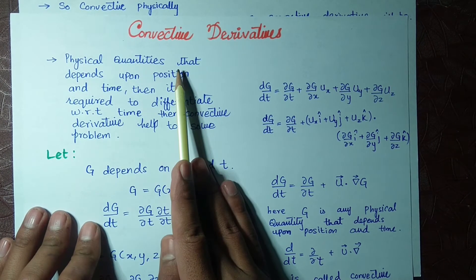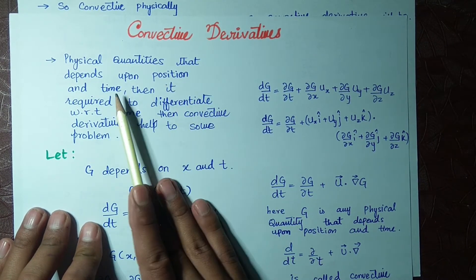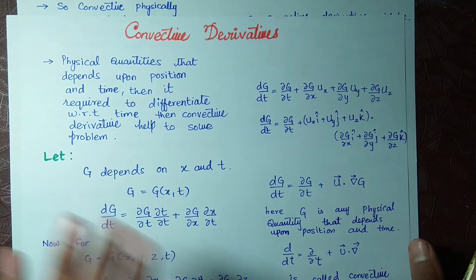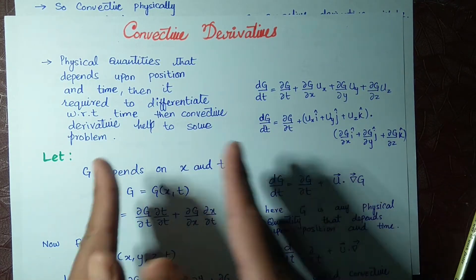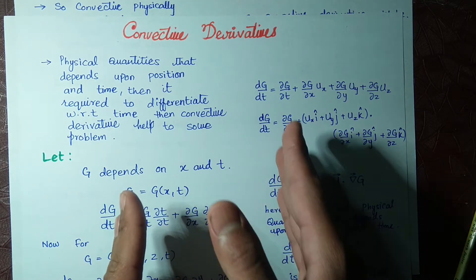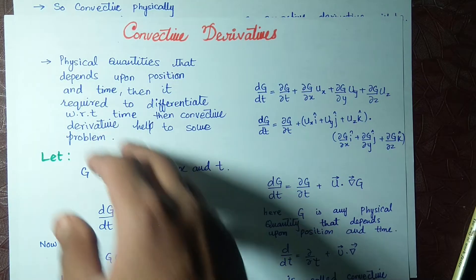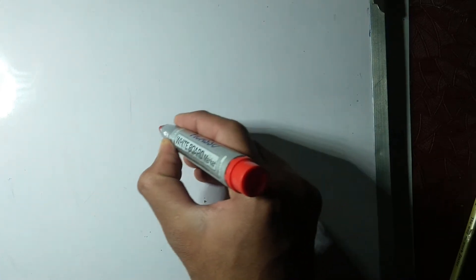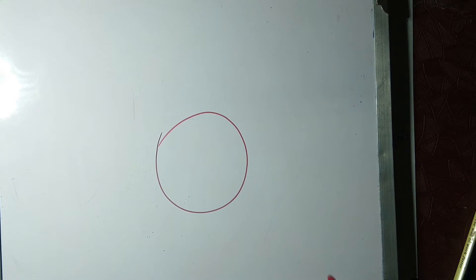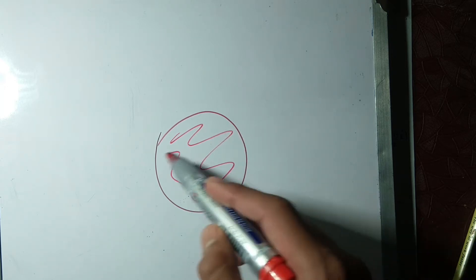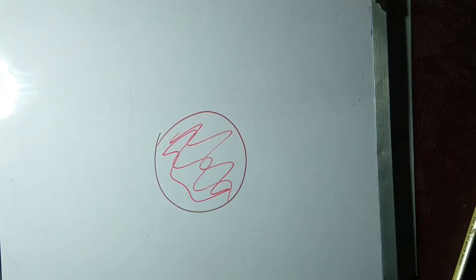Physical quantities that depend upon position and time require differentiation with respect to time. When some physical quantity is changing with respect to time, there is also a change in its position. For example, consider a cup of tea with a layer of cream on its surface.